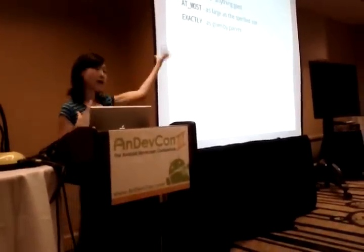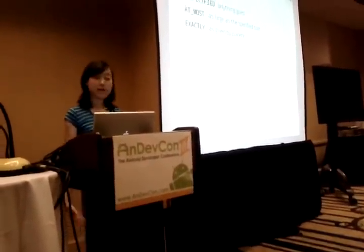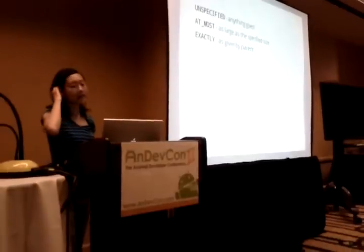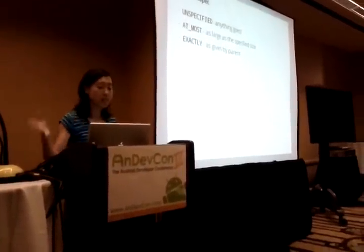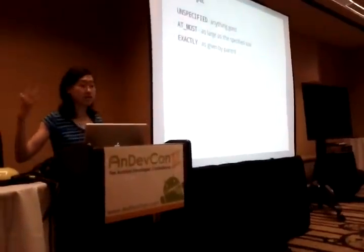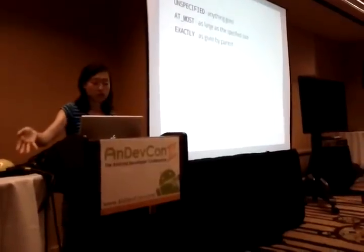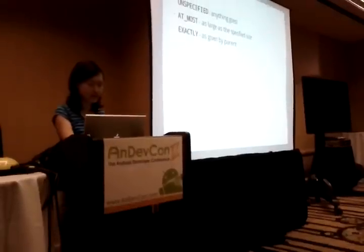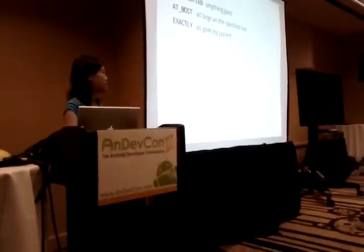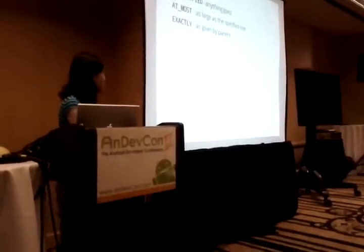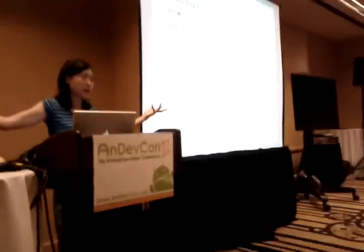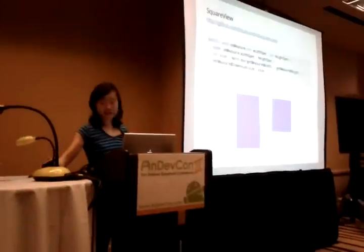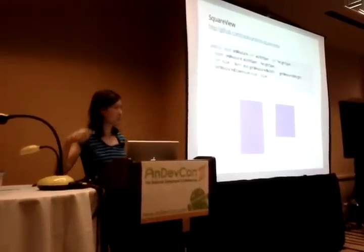So there are three kinds of modes. One is unspecified — the parent says be as big as you want, no constraints, the sky's the limit. Then there is at most — maybe you have a table layout that says you have this much space, take as much as you want but this is the max you can go. And exactly is when the parent tells the child: you are going to be exactly this big.